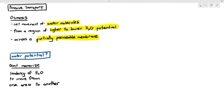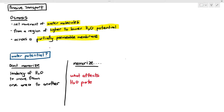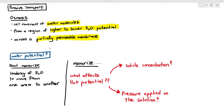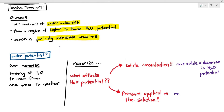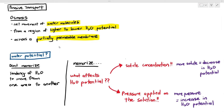What affects water potential? Water potential is affected by two factors: solute concentration and the external pressure applied to the solution. Solutes are anything that dissolves in a solvent — in this case water — such as glucose, sucrose, ions like sodium ions, or salts like sodium chloride. Higher solute concentration decreases water potential, while higher pressure increases water potential.